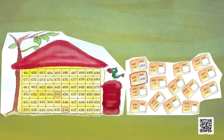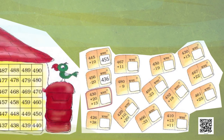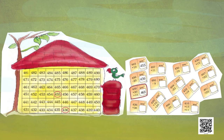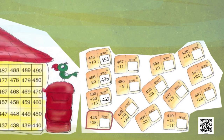Now dear children, look here: 430 plus 20 plus 13 gives us 463. Let us find this room number — 463. Let's circle it.